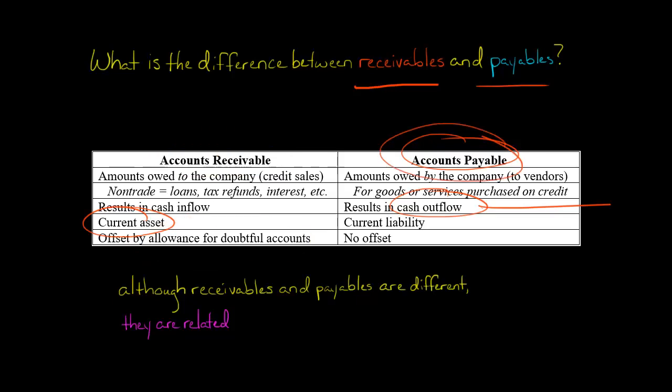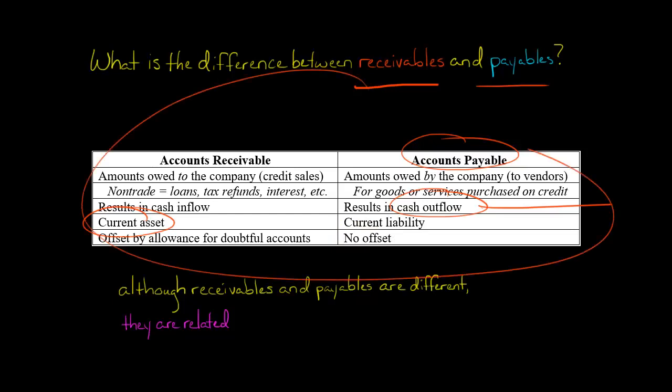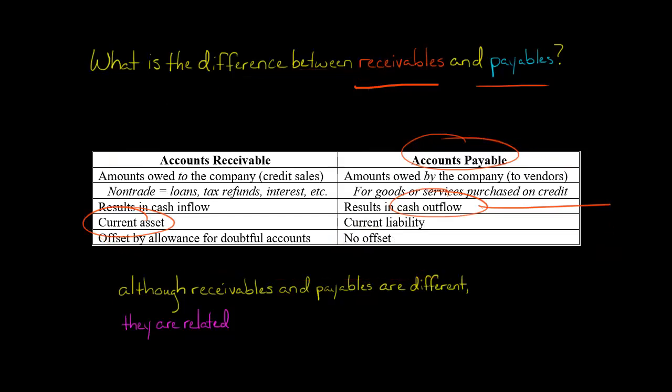Accounts payable is not presented net of uncollectable accounts — there is no such offset. Although receivables and payables are different, and I've laid out the reasons here for that, they are related.